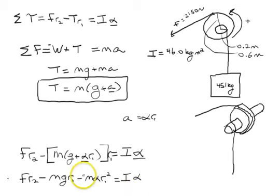At this point, I can collect this term over to the other side, and I can factor out the angular acceleration. The angular acceleration is equal to the force times the outside radius minus mass times gravity times the inside radius.